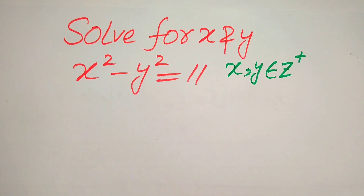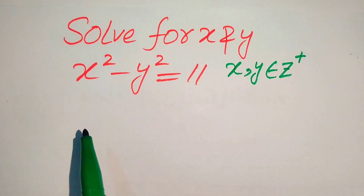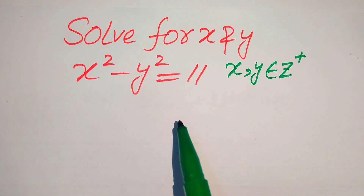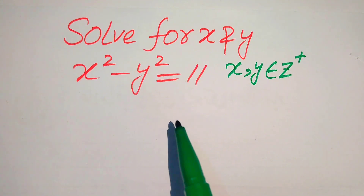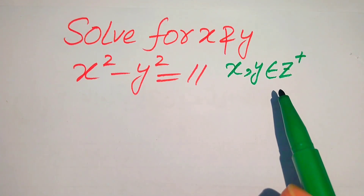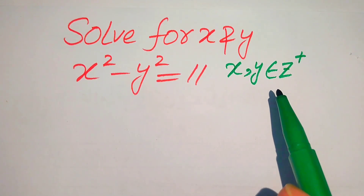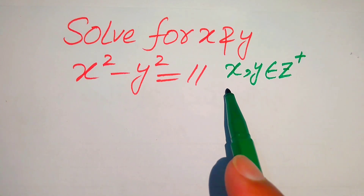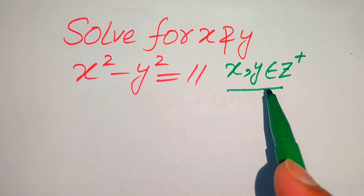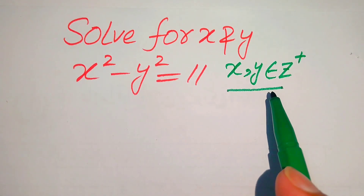Hello everyone. How to solve this problem for the values of x and y if we have x squared minus y squared equals 11, and we solve this problem for all the positive integral values of x and y. The condition is that x and y must be positive integers.